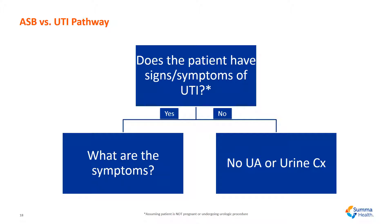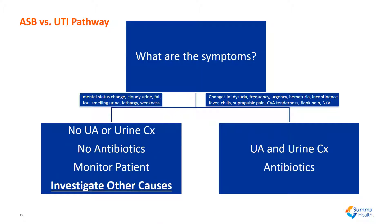This is a pathway to help you differentiate asymptomatic bacteria from urinary tract infection. Does the patient have signs or symptoms of a UTI? If no, no urinalysis or urine culture should be ordered. If yes, what are the particular symptoms? If the symptoms include changes in dysuria, frequency, urgency, hematuria, incontinence, fever, chills, etc., then at that point it is appropriate to do a urinalysis and urine culture and prescribe the patient antibiotics.